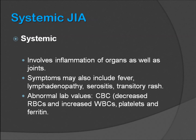Systemic JIA involves inflammation of organs as well as the joints, and it affects approximately 10 to 20 percent of all JIA patients. The ratio in males and females is approximately equal. Symptoms may include fever, lymphadenopathy, serositis, and transient rash, which generally occurs with the onset of fever. Systemic JIA rarely affects the eyes. A polymorphism in macrophage migration inhibitory factor has been associated with this condition. Abnormal lab values include anemia, elevated white blood cell count, elevated platelets and ferritin, which could be secondary to a reactive process. Rheumatoid factor and ANA are regularly negative in systemic JIA patients.